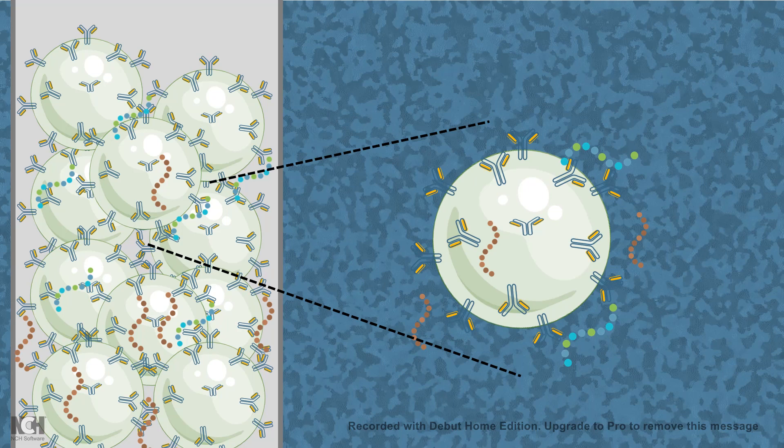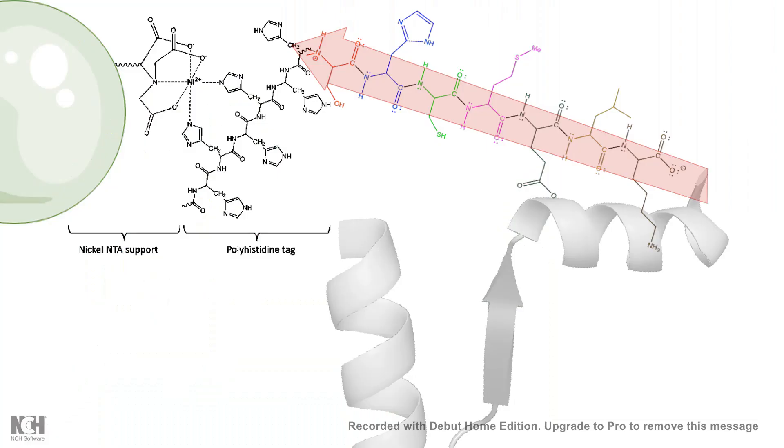So it would retain that blue protein in the column and in the wash step these brown proteins and many other proteins would be washed away. But our protein of interest would be retained in the column. And after that we can elute that to get our protein of interest.